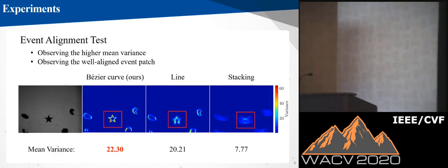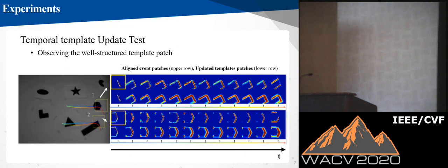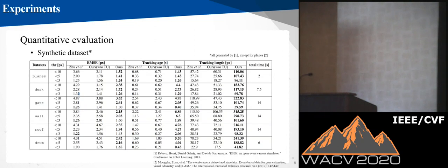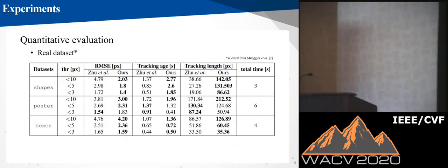In our experiment, we show that our method aligns the events better than others, both quantitatively and qualitatively. For the template update experiment, well-structured patches are constructed using our method, while without it the results are not consistent. According to the quantitative results on the synthetic dataset, our methods show improvement in both error and tracking length. On the real datasets, our methods show similar or slightly better performance.